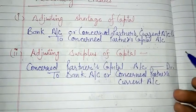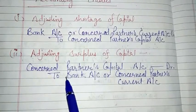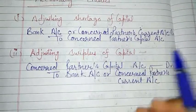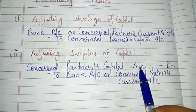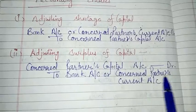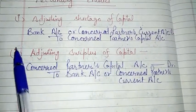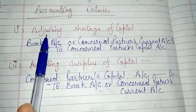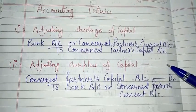If any partner's capital has some surplus or excess, then in that condition you reverse the journal entry — because we are paying it out. The entry becomes: Concerned Partner's Capital Account Dr. To Bank Account or Concerned Partner's Current Account. These are the two types of entries you need to make when adjusting capital in a partnership firm.